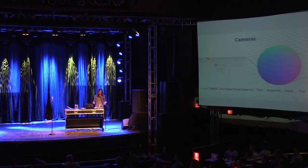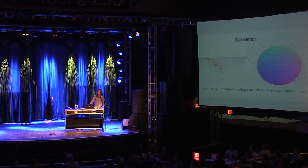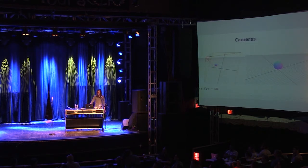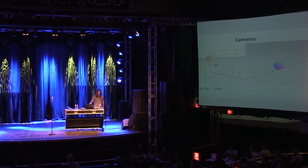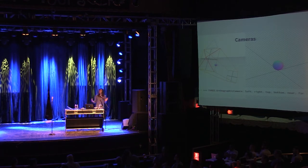The perspective camera parameters are the field of view, aspect ratio, and the near and far clipping planes. The aspect ratio is the window width divided by the window height. The field of view is the angle between the top and bottom planes of the camera's viewing frustum. You can increase the field of view for a wide angle lens. If you can't see an object when you add it, you might need to increase the far clipping plane, because anything outside of the clipping planes won't be rendered.